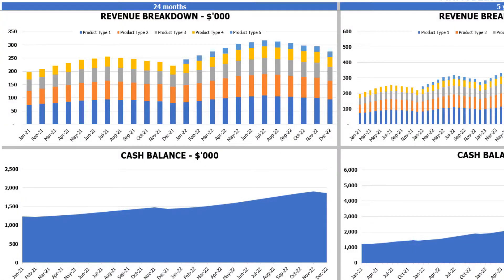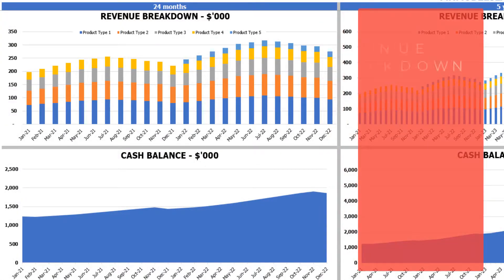On the financial charts tab you can see the main financial outputs in graphical form. On the left side is a chart for 24 months and on the right side a chart for five years (60 months). The top charts show the revenue breakdown by product types.